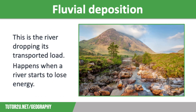Let's finish off by thinking about deposition — a river dropping its transported load. The bigger the particles being transported, the greater velocity that is needed to keep the load moving. So once the river starts to lose energy, the largest boulders are the first to be dropped onto the riverbed. This is why you see large boulders in the riverbed in the upper course close to the source, but fine silt in the lower course closer to the mouth of the river.